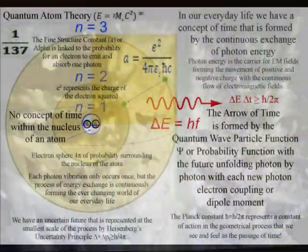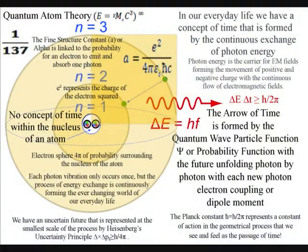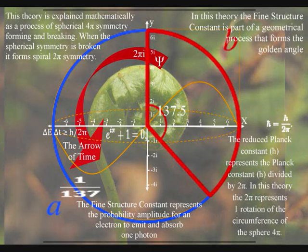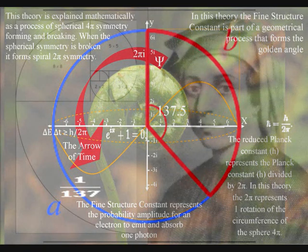In this theory the fine structure constant, as part of a geometrical process, forms the golden angle and with it the Fibonacci spiral that we see almost everywhere in nature.